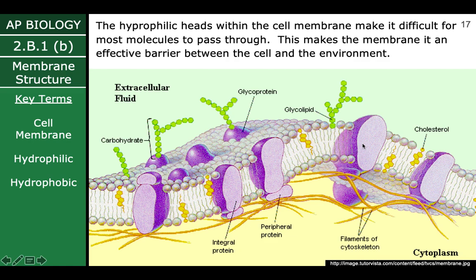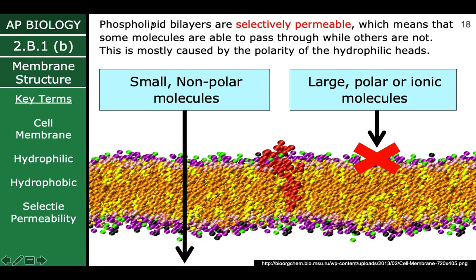The phospholipid structure makes it actually really hard for most things to get in or out, and that's actually really good for the cell. It helps keep the outside outside and the inside inside, making it a really effective barrier. That allows the cell to control what can come in and what can go out through other means. We give this terminology of selective permeability — or we say that phospholipids are selectively permeable. If you think about 'selectively,' you are making a selection, you are choosing. And permeable means to pass through. So if you are selectively permeable, that means you are letting some things — whatever you choose — pass through.